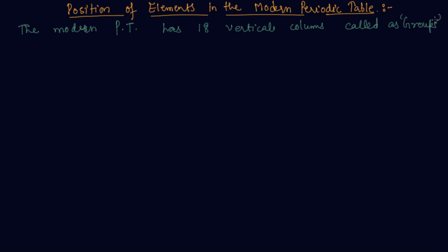And seven horizontal rows known as periods. Let us see what decides the placing of an element in a certain group and certain period.